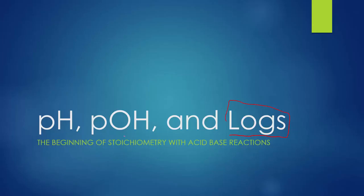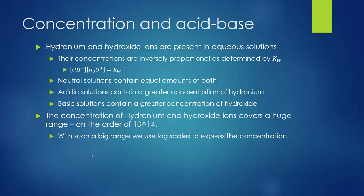First let's do a quick review of some acid-base concepts. We know that acids produce hydronium and bases produce hydroxide. The concentration of hydronium times hydroxide is a constant because all aqueous solutions at equilibrium come to the equilibrium constant, which we call Kw for water. That is 1 times 10 to the negative 14th, at least for water at 25 degrees Celsius.